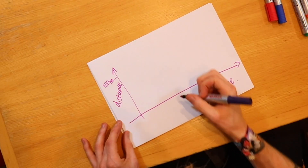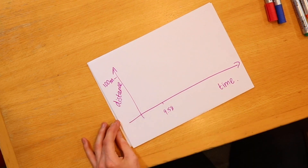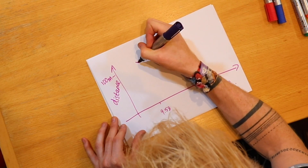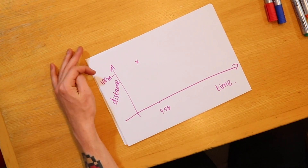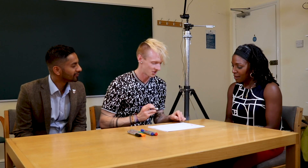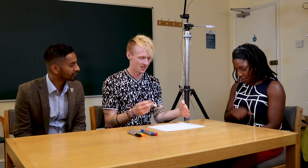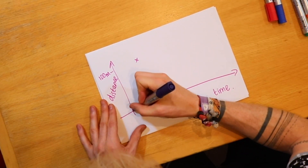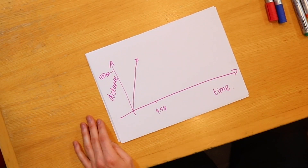Do you know his world record time for 100 metres? 9.58 seconds. It is indeed 9.58 seconds. So if we call this 9.58, we want to put a dot or a little cross at a point on our graph — he's gone 100 metres in 9.58 seconds. That cross is where Usain is as he finishes. And he starts at 0 metres at 0 seconds. As the gun goes, he's on the start line — bang, off he pops, setting his world record.